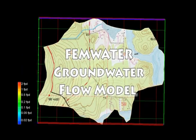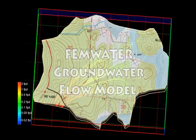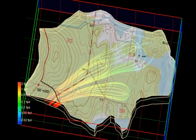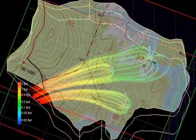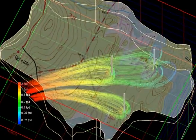This animation of a GMS FEMWATER groundwater model in Juneau, Alaska shows the flow paths and capture zones associated with several municipal water wells.